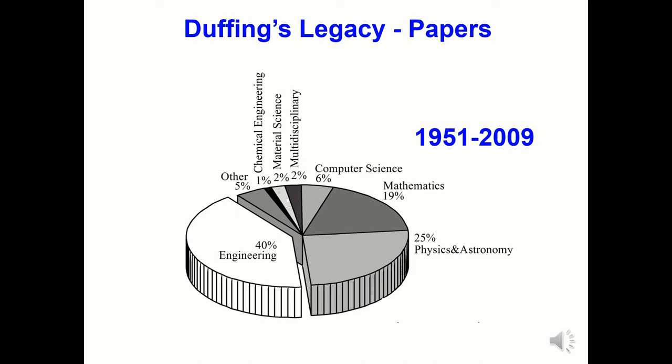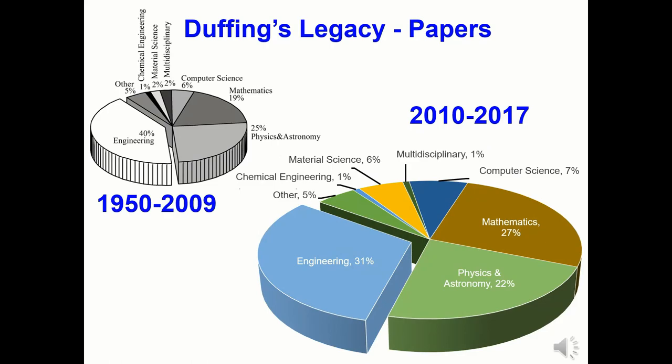A pie chart shows the citing papers grouped into subject areas from 1951 to 2009. It is clear that the lion's share is in engineering, followed by physics and then mathematics. Looking at the pie chart for the past eight years, there are some similarities, but engineering has fallen by about 9%, physics by 3%, with an increase in mathematics of about 8%.